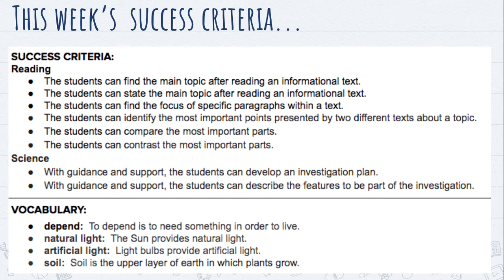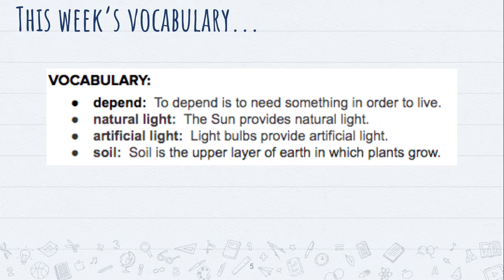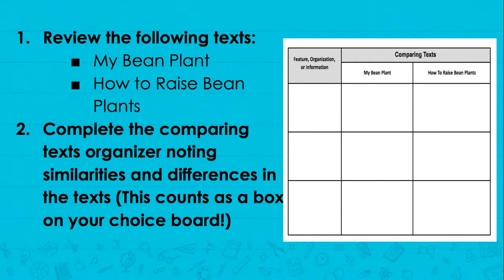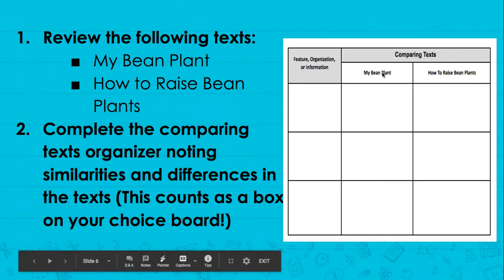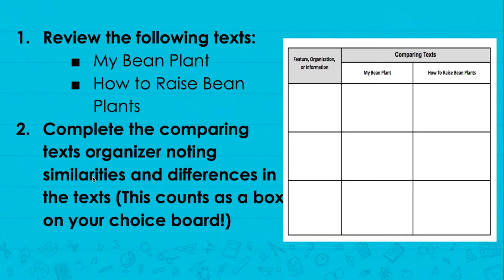Your success criteria stays the same. Vocabulary is the same. Your task for today is a little bit different than the other days this week. You're going to review the texts My Bean Plant and How to Raise Bean Plants — just look them over, remember what they talked about, what the main idea was. Then you're going to complete this Comparing Text Organizer noting similarities, things that are the same, and differences, things that are different, in the texts.